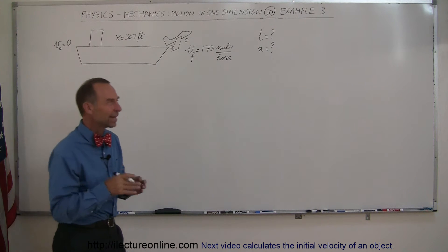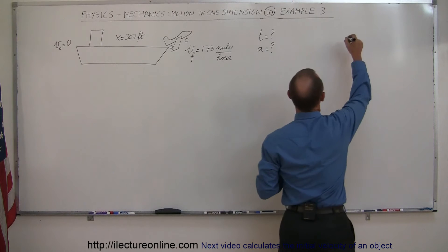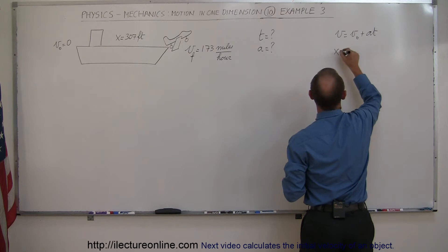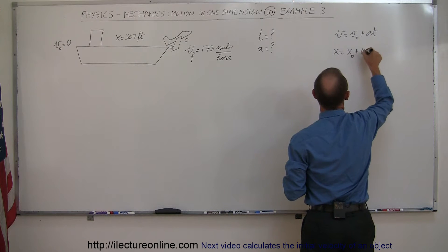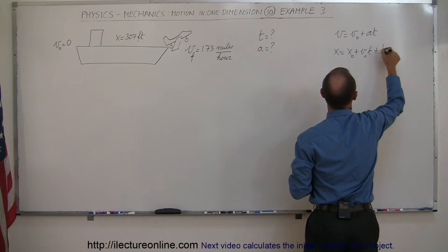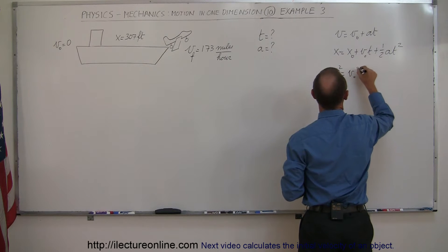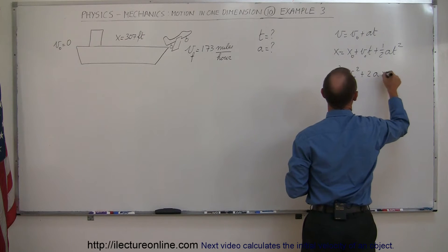So we're going to write down the equations of kinematics. The first one is V equals V sub nought plus AT. The second one is X equals X sub nought plus V sub nought T plus 1 half AT squared. And the third one is V squared equals V initial squared plus 2AX.